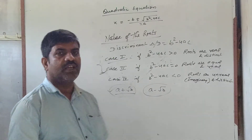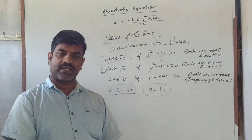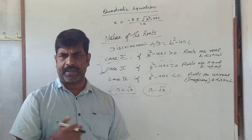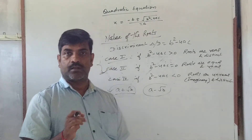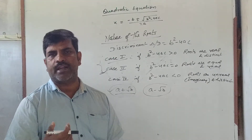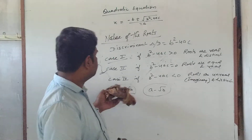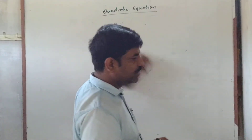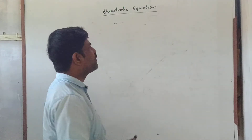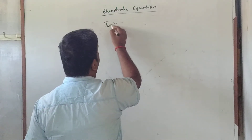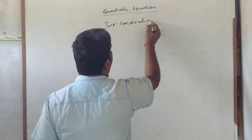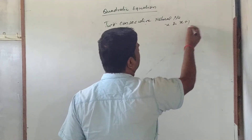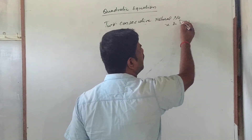The last exercise of quadratic equations involves story-type (word) problems. The same concepts studied so far are used — the only difference is that instead of a prepared equation, you have to form the equation from the given conditions. For example: find two consecutive natural numbers whose sum of squares is 41. Whenever you take two consecutive natural numbers, assume them as x and x+1.